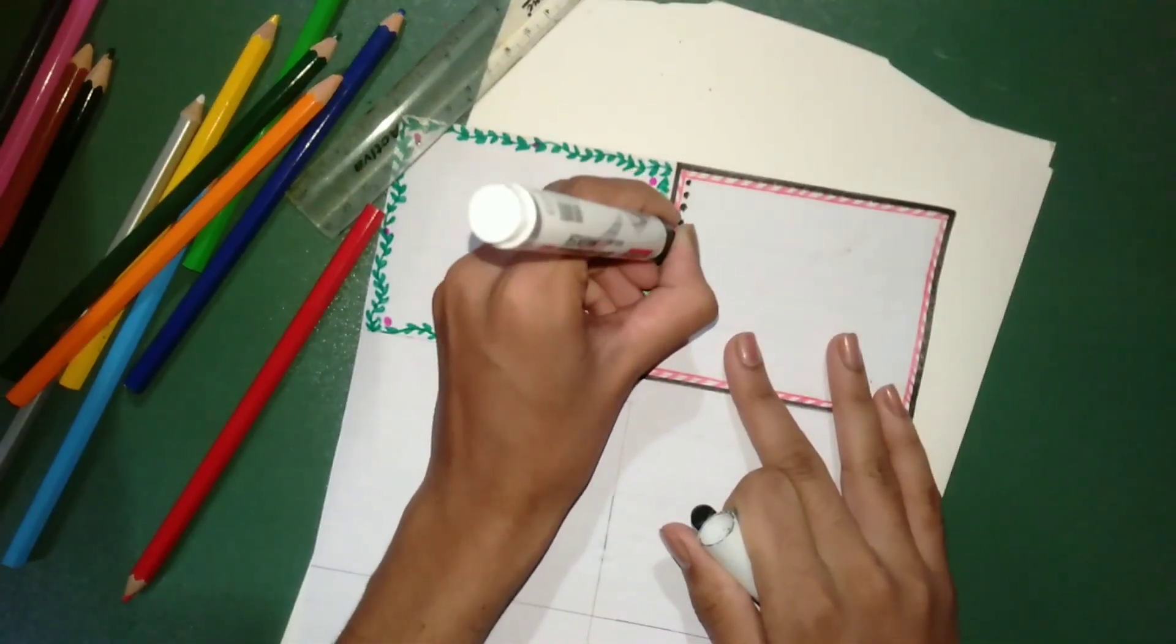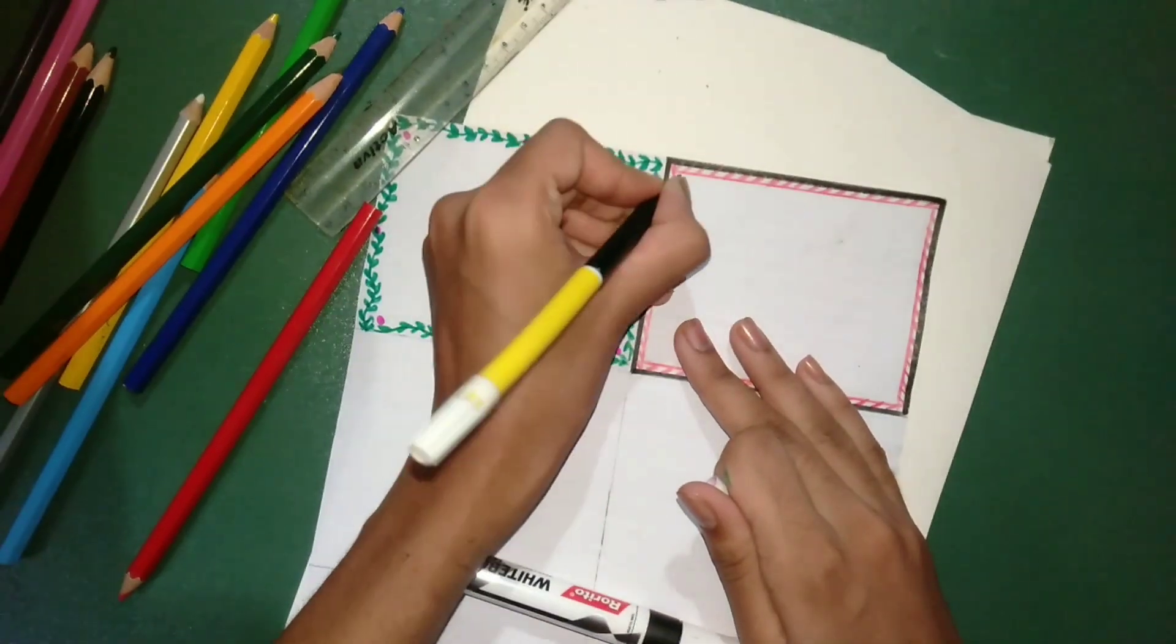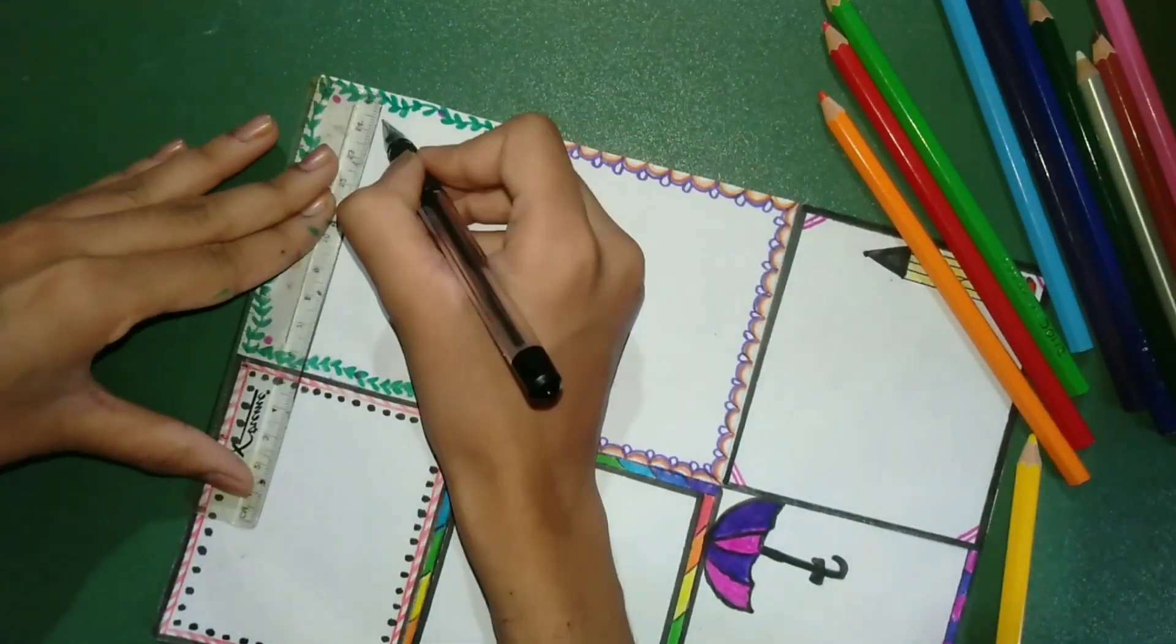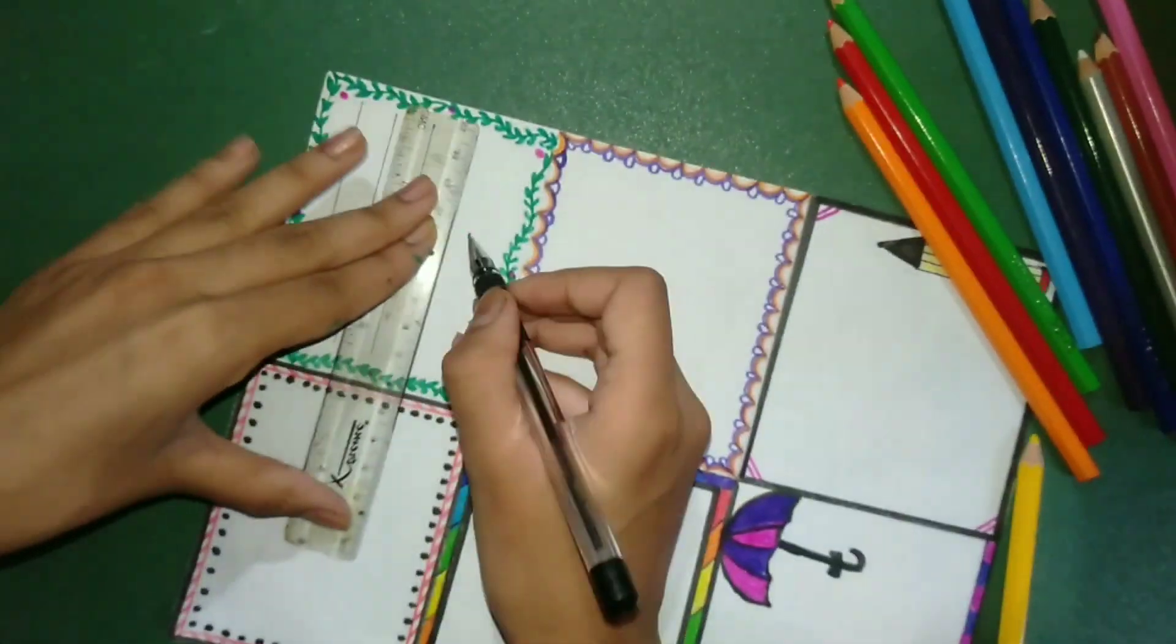If you like my craft, please like and subscribe. So guys, we will complete it. And this way, I've made rainbow and umbrella designs. Then we have to draw lines like this.